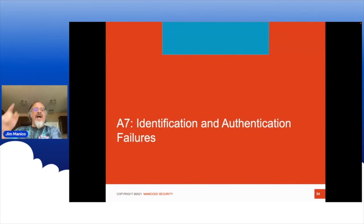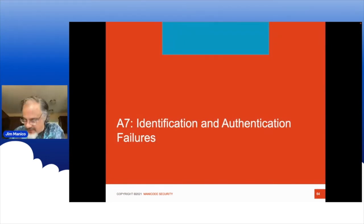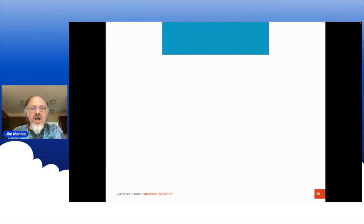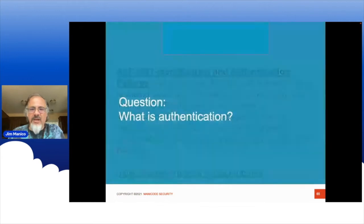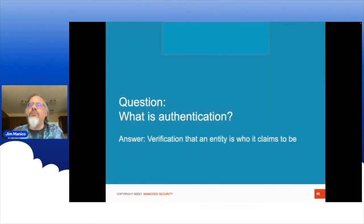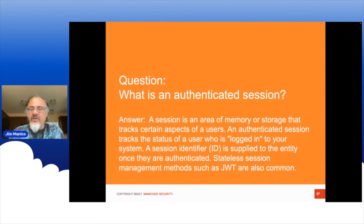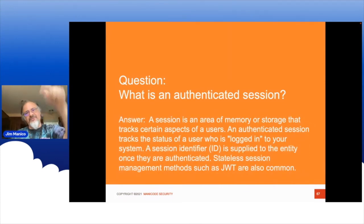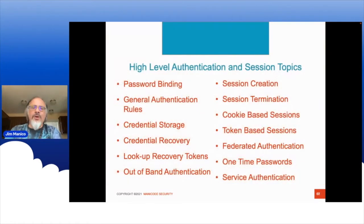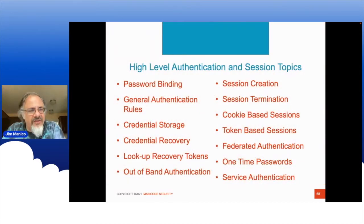A7: identification and authentication failures — another ginormous category. Authentication is proving the identity of a user. A session is how we track users, either with a JSON web token (stateless) or a traditional session (stateful). There are many sub-categories to think about when it comes to authentication.